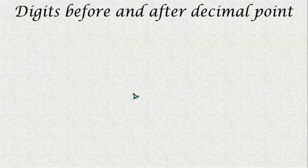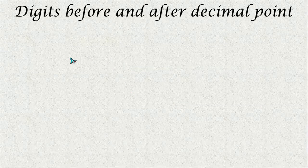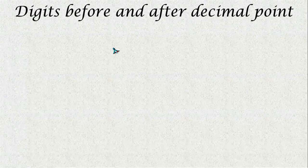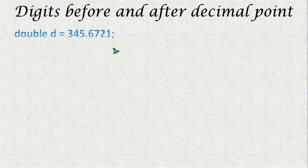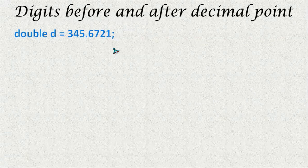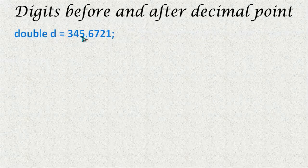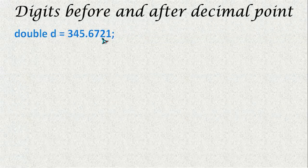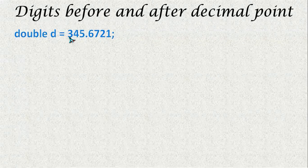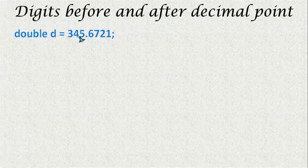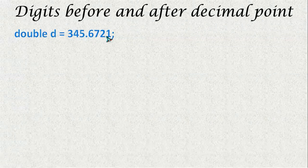First I will explain the idea of finding digits before and after the decimal point of a number. Here the number is given as double type. For example, I have 345.6721. The output should be the number of digits available before the decimal point, which is 3 here, and then after the decimal point, which is 4 in this example.